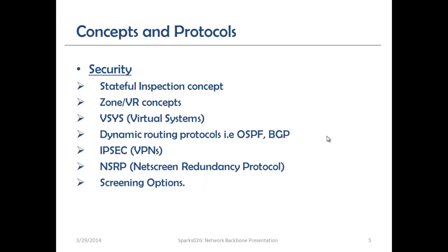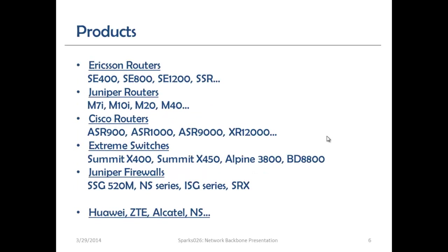Those are the three basic concepts: routing, switching, and security. Now let's look at the product lines we can use to implement this. We need to consider which vendor products to use. The next slide shows different vendor names like Ericsson, Juniper, Cisco, Extreme, Huawei, ZTE, and Alcatel Nokia. It depends on your budget and requirements. Ericsson has a strong backbone due to their MPBN — Mobile Packet Backbone Network concept — while Juniper and Cisco are also strong leaders in network backbone equipment.